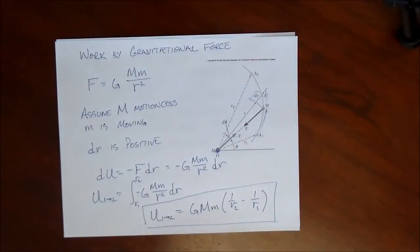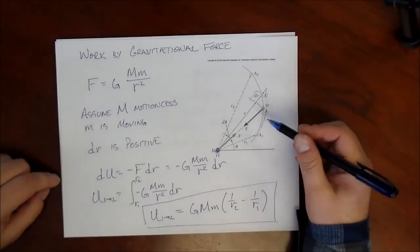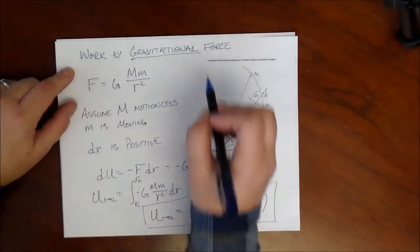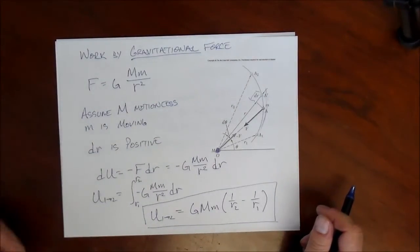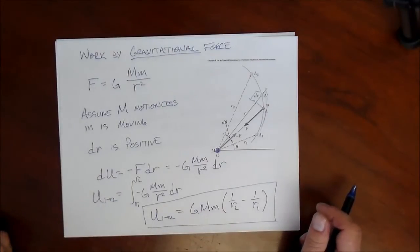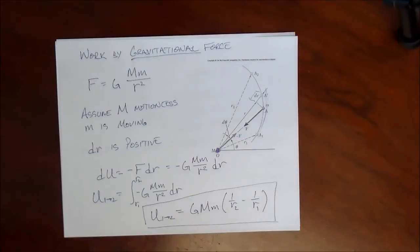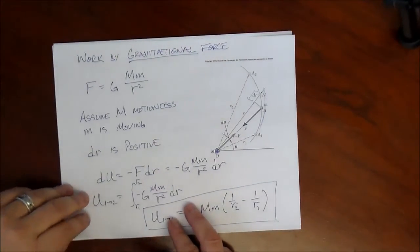So those are expressions for work: the work done by the gravitational force, spring force, weight, and constant force. Now we've established expressions for several ways of doing work.